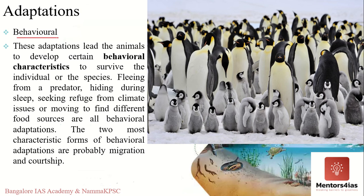The third type is behavioral adaptation, which refers to responses made by an organism that help it survive or reproduce. The best example is migration, where birds from higher latitudes or Siberia migrate to escape the winter cold. Similarly, emperor penguins in Antarctica crowd together and stay close to share warmth in the cold environment — all behavioral adaptations that help species survive more comfortably.